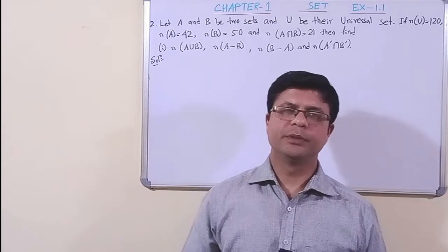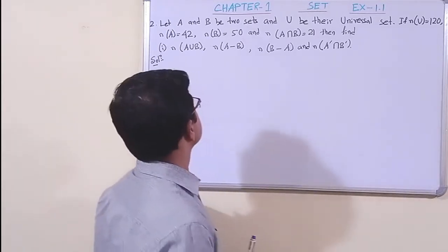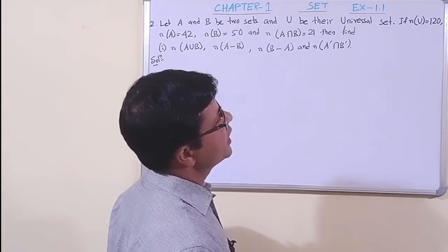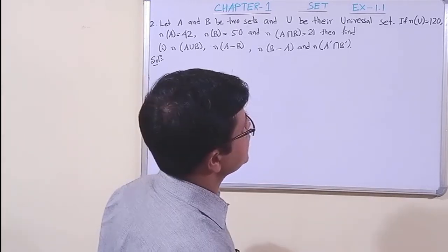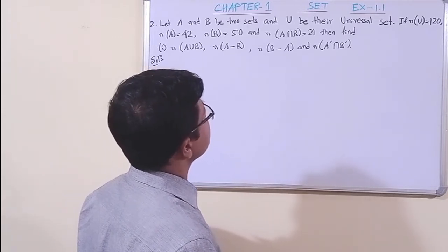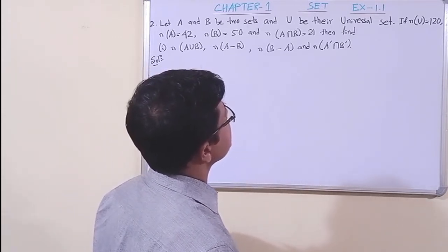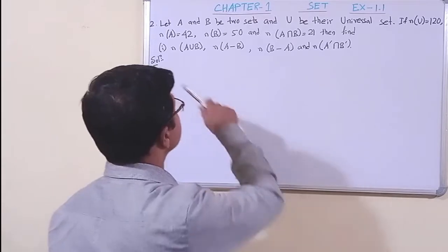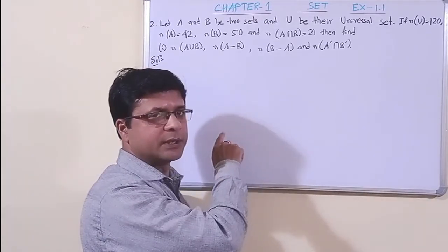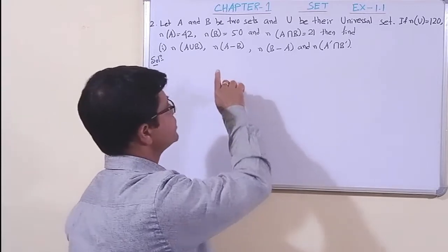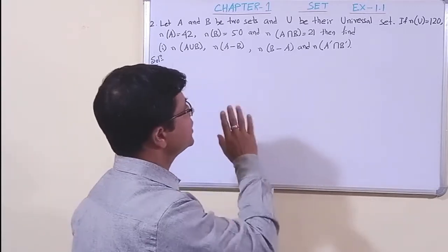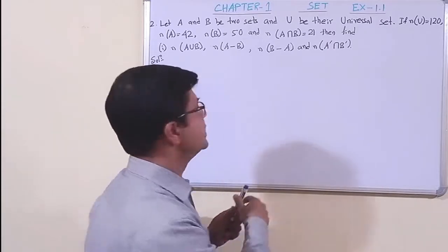Now dear students, we have taken question number two. Let us read the question: let A and B be two sets and U be their universal set, where n(U) = 120, n(A) = 42, n(B) = 50, and n(A∩B) = 21. This question is based only on formulas, so if you know the formula the sum is very easy.